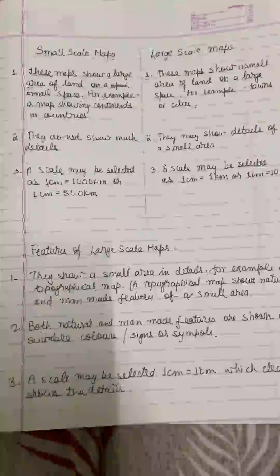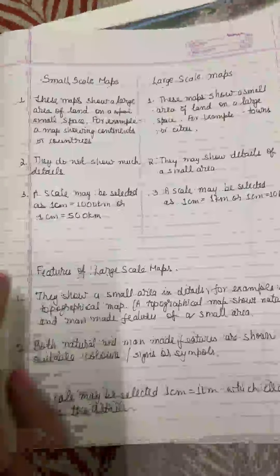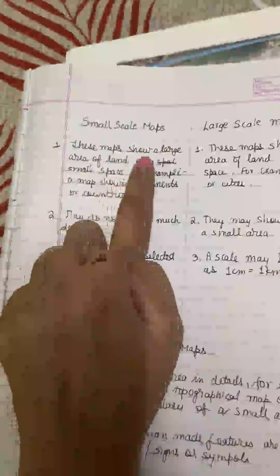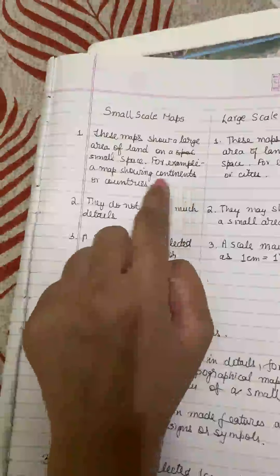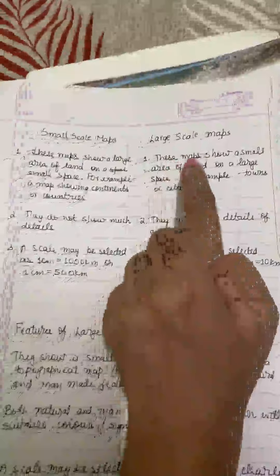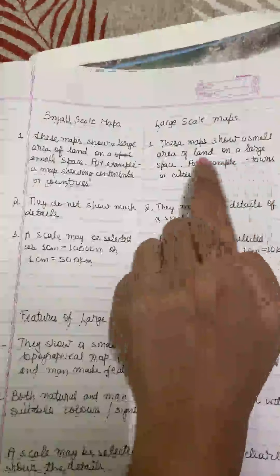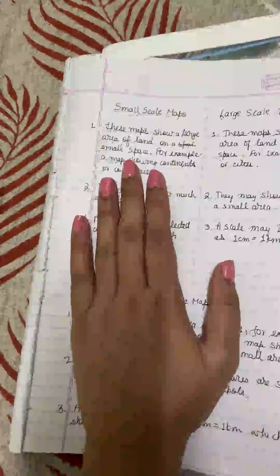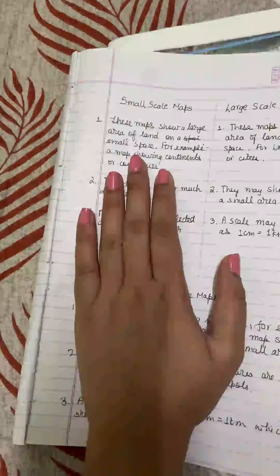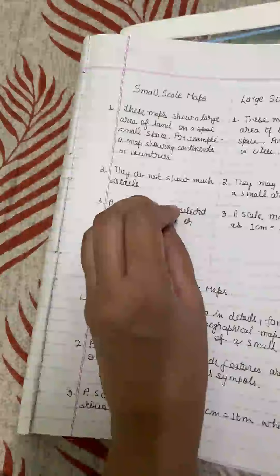Maps can either be small scale maps or large scale maps. A small scale map shows a large area of land on a small space — for example, a map showing continents and countries. A large scale map shows a small area of land on a large space — for example, towns or cities. So if I am trying to show a world map or a map of India, I will use a small scale map.